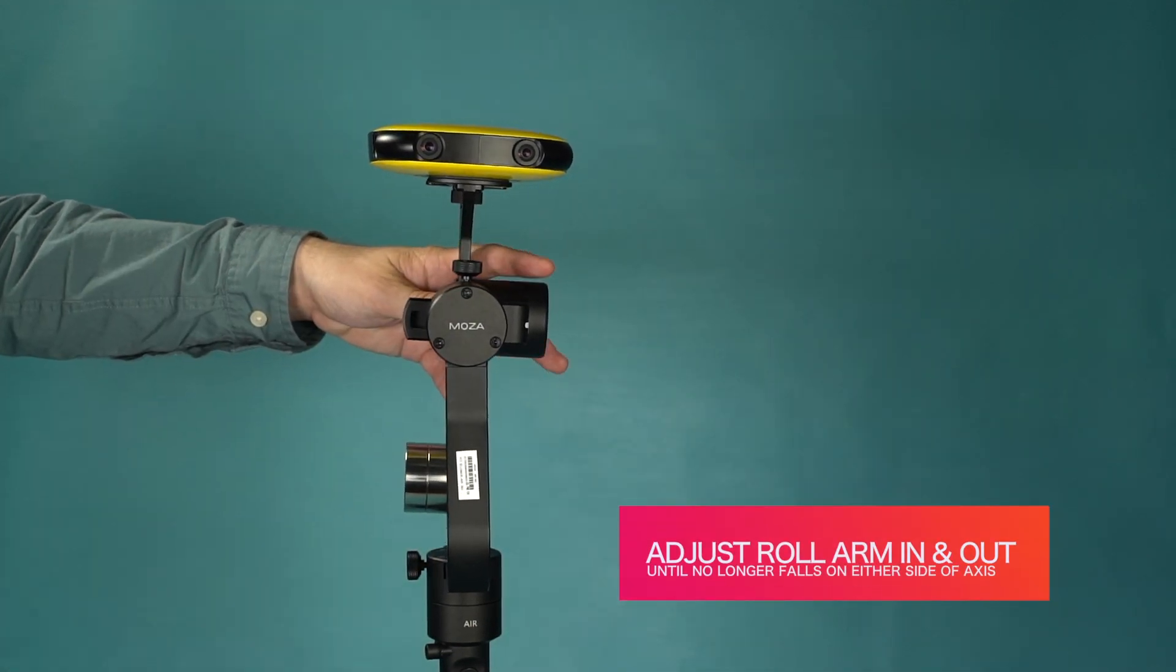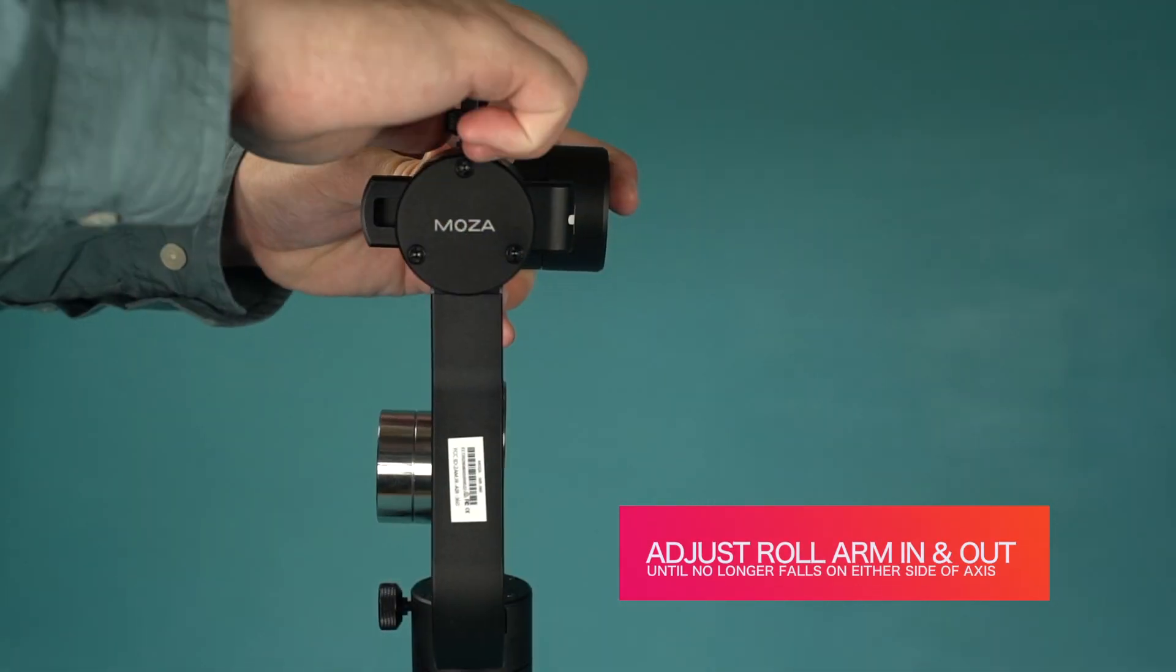Adjust the roll arm in and out until the camera no longer falls to either side of the roll axis.